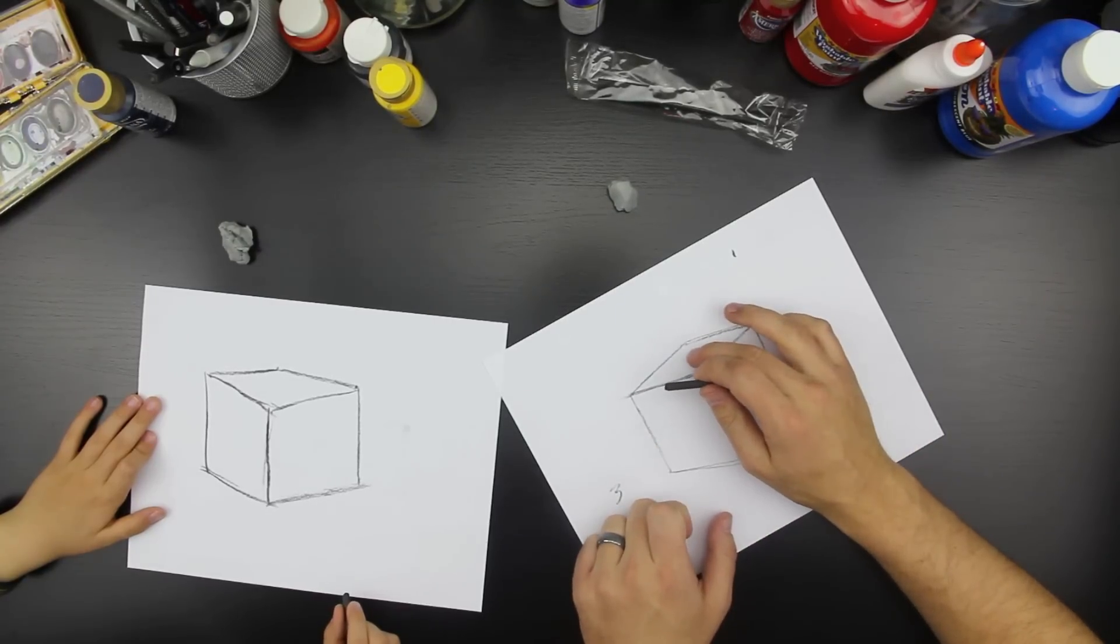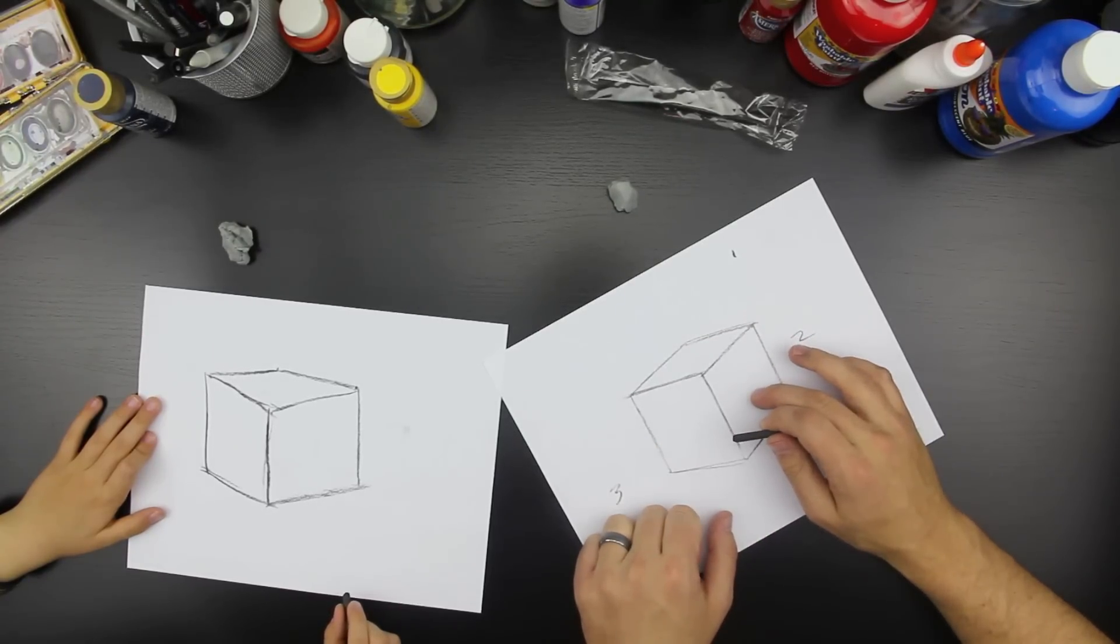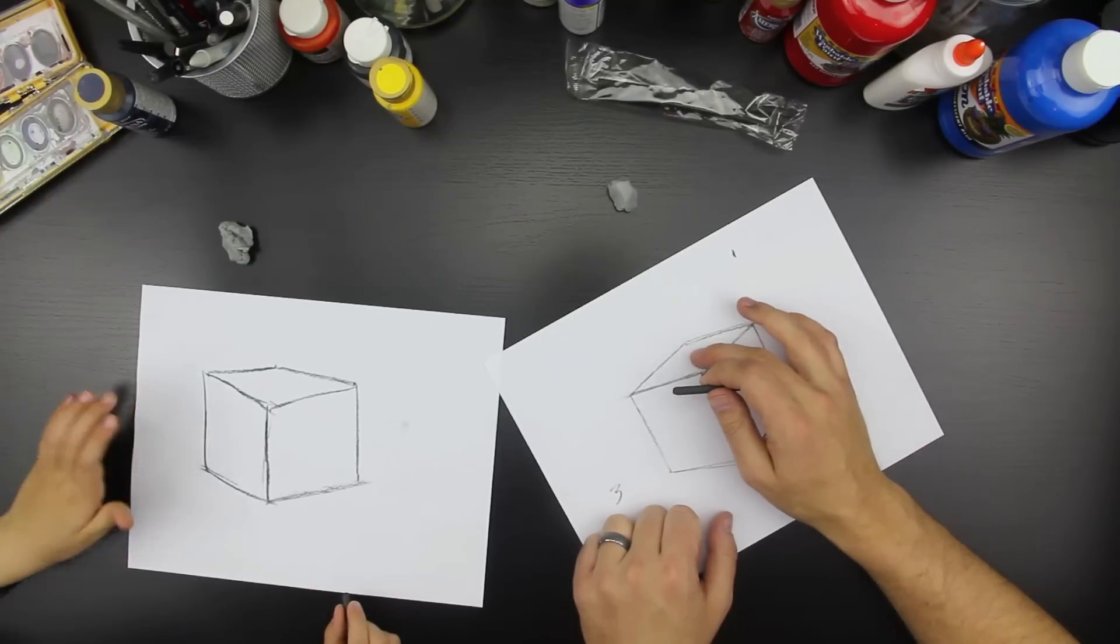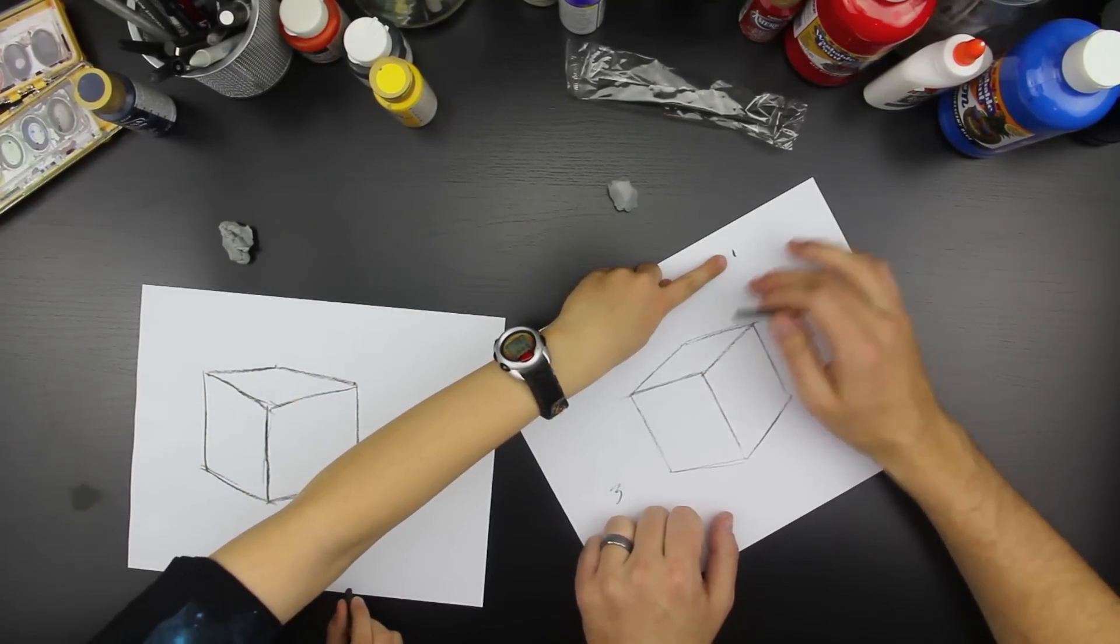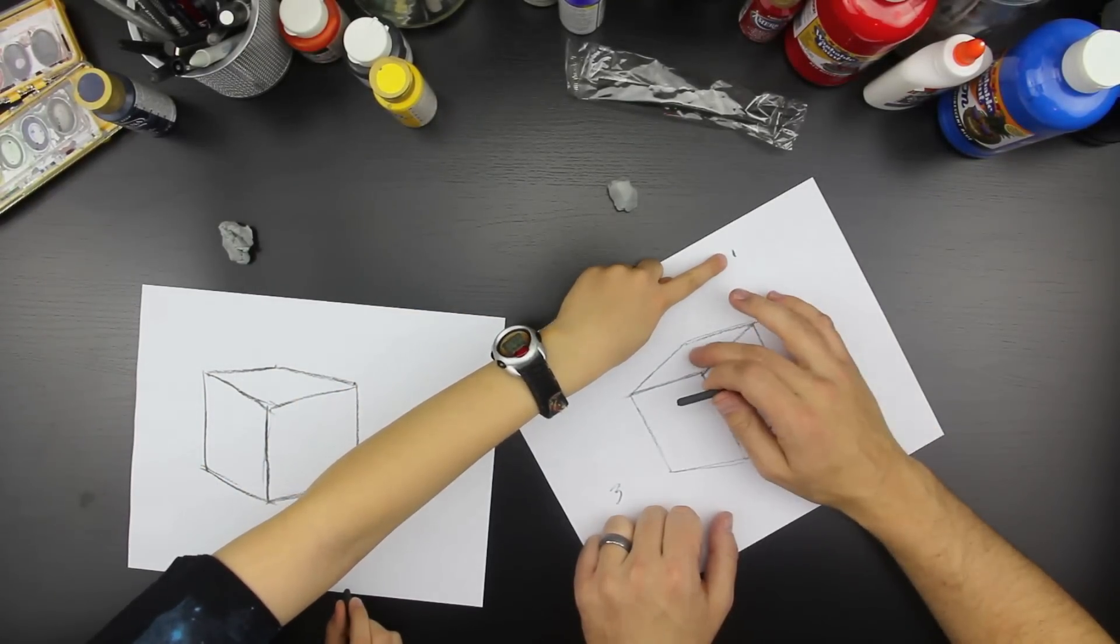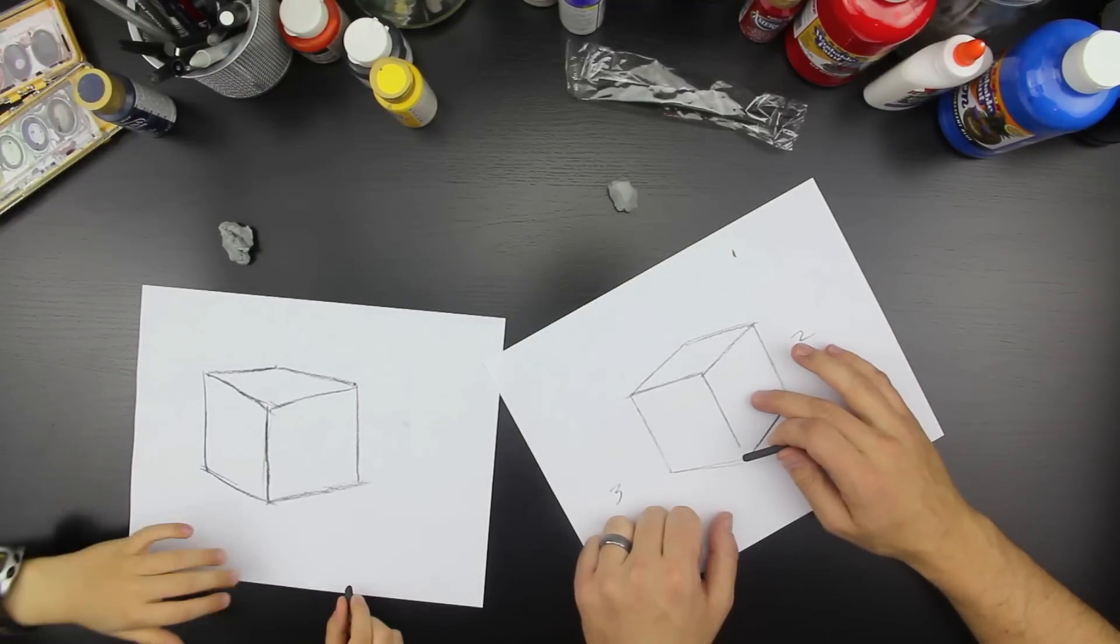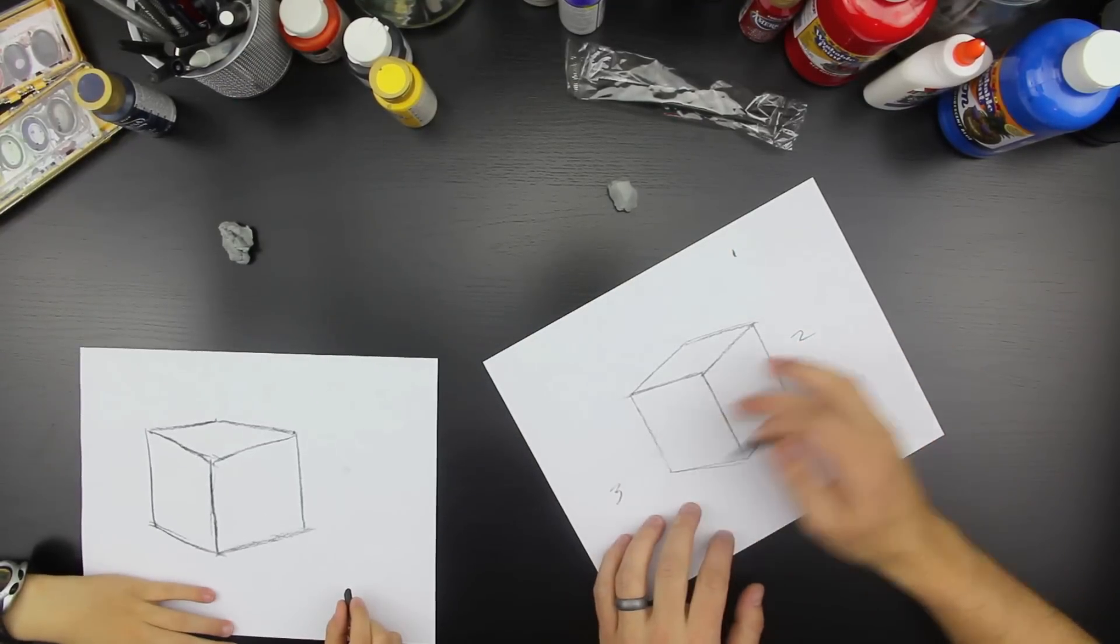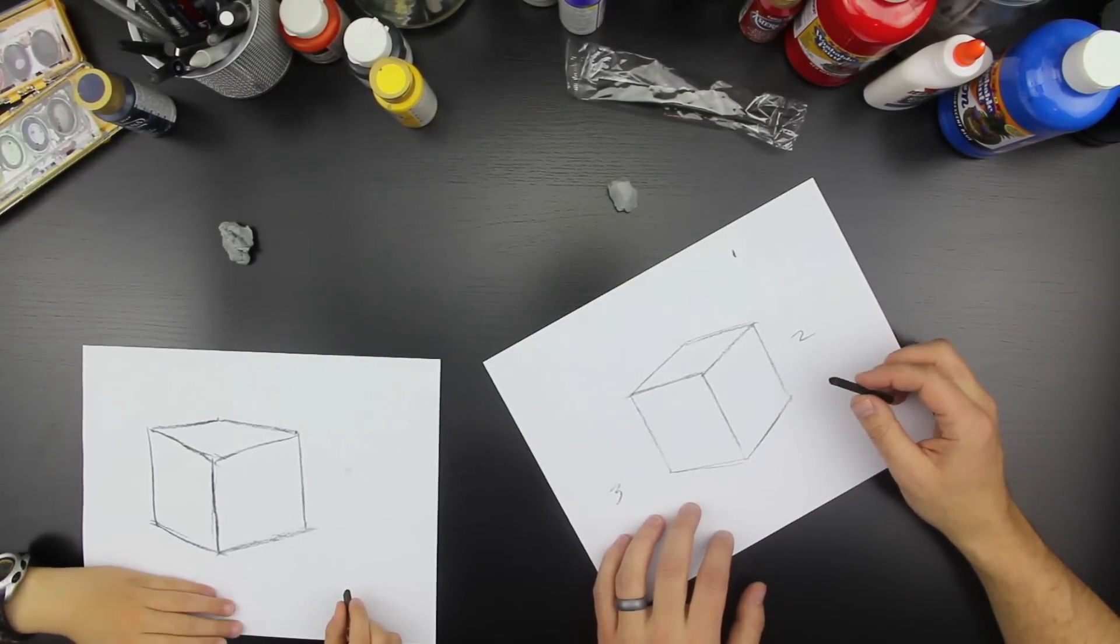So this one's gonna be super light. This one's gonna be kind of a gray. In fact, we won't even do any on this. This one's gonna be light, this surface up here. And then this surface is gonna be gray. And then this one's gonna be really dark. Cool?